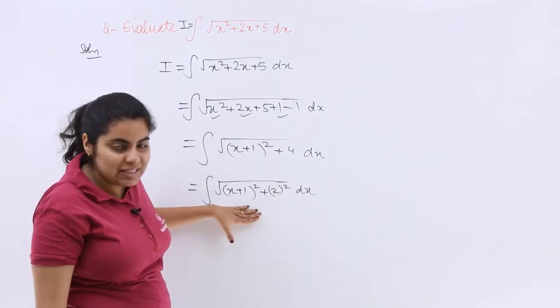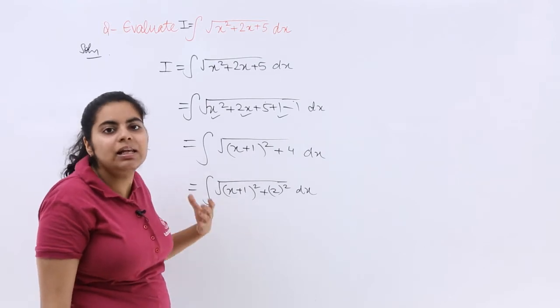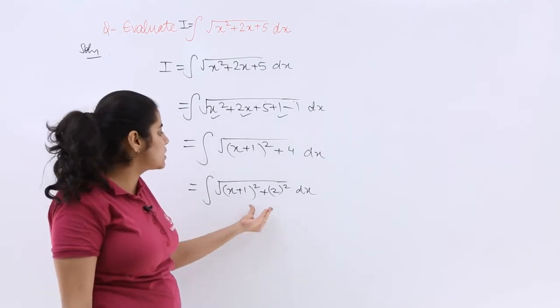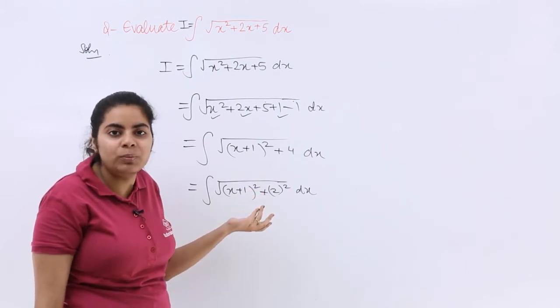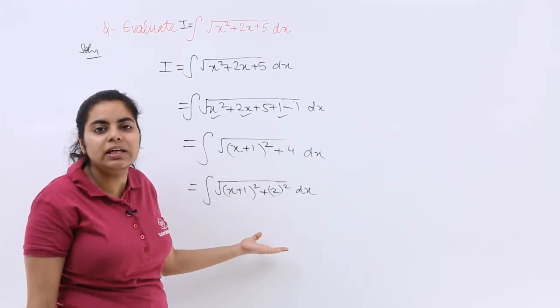Now, if I see (x + 1) as a single entity, then x² + a² is what is there under the root, and we have to use its integration formula.